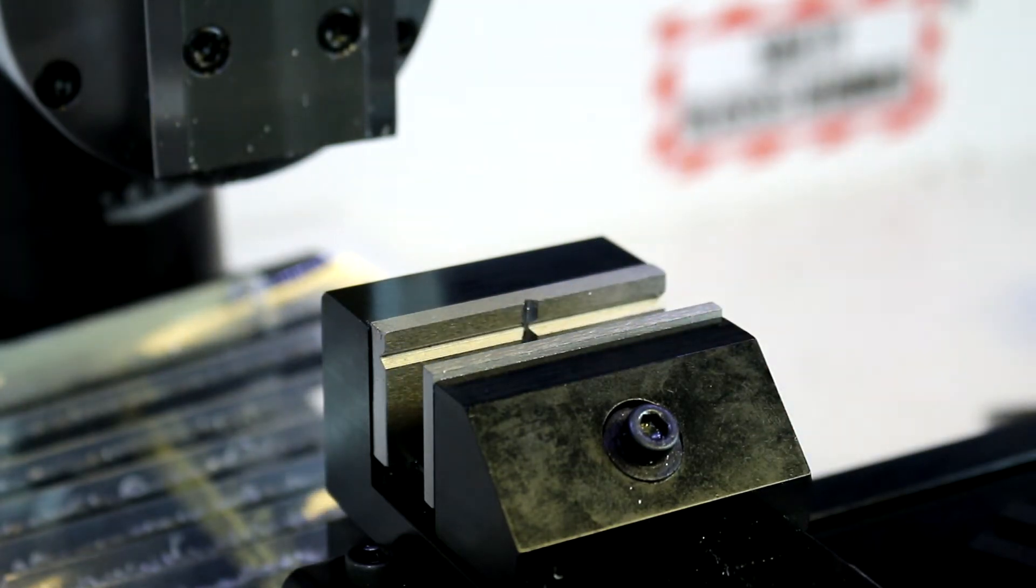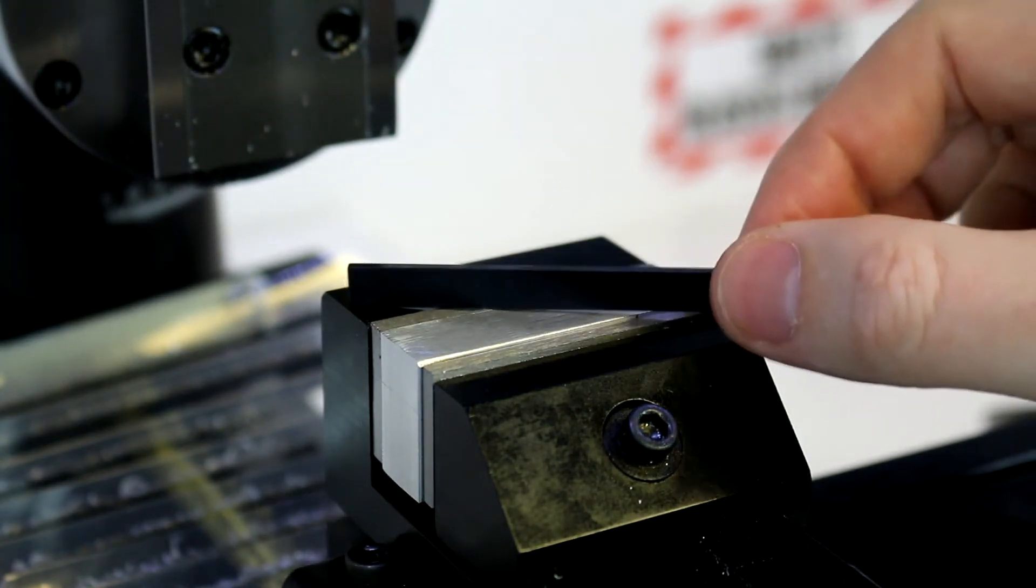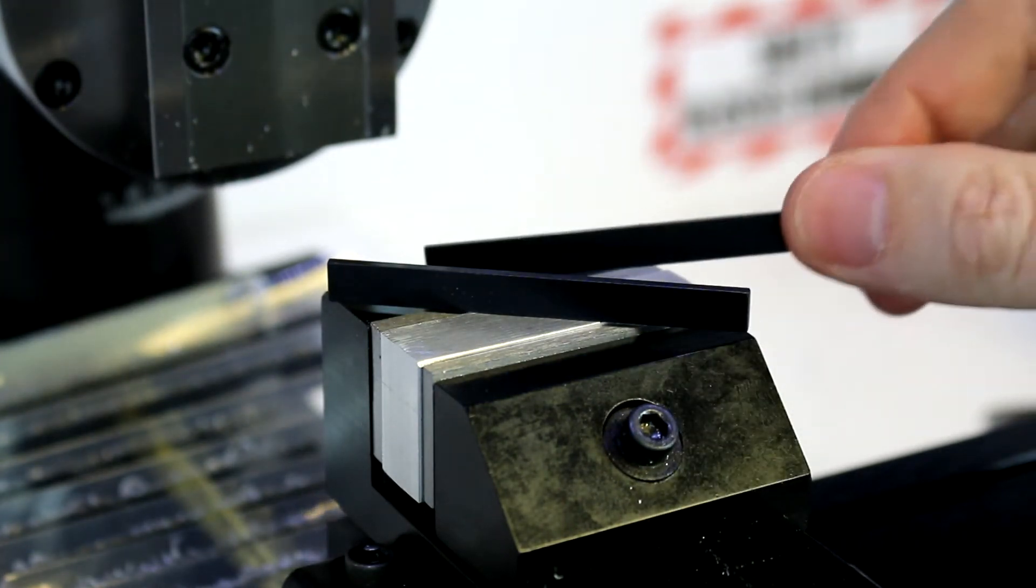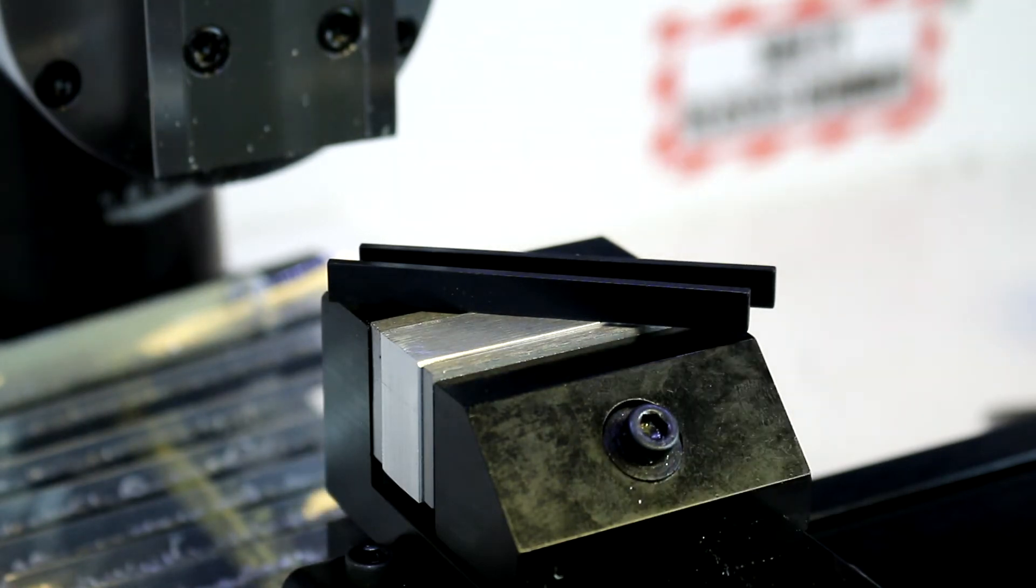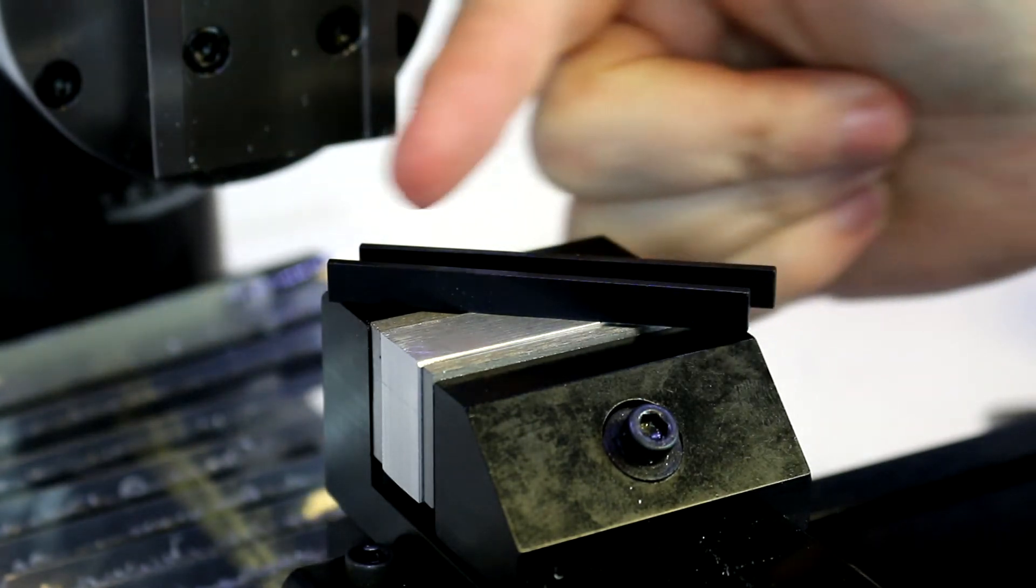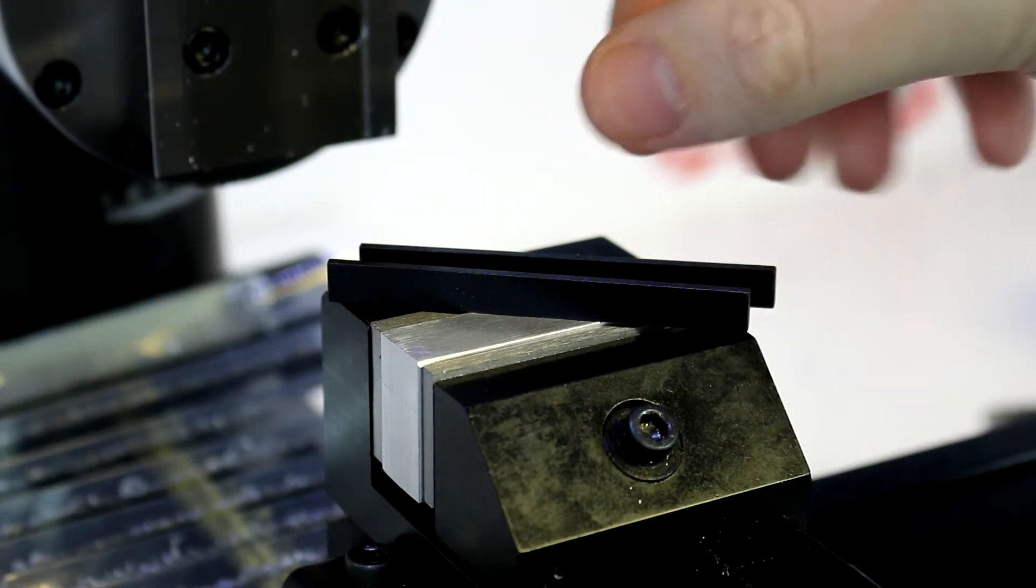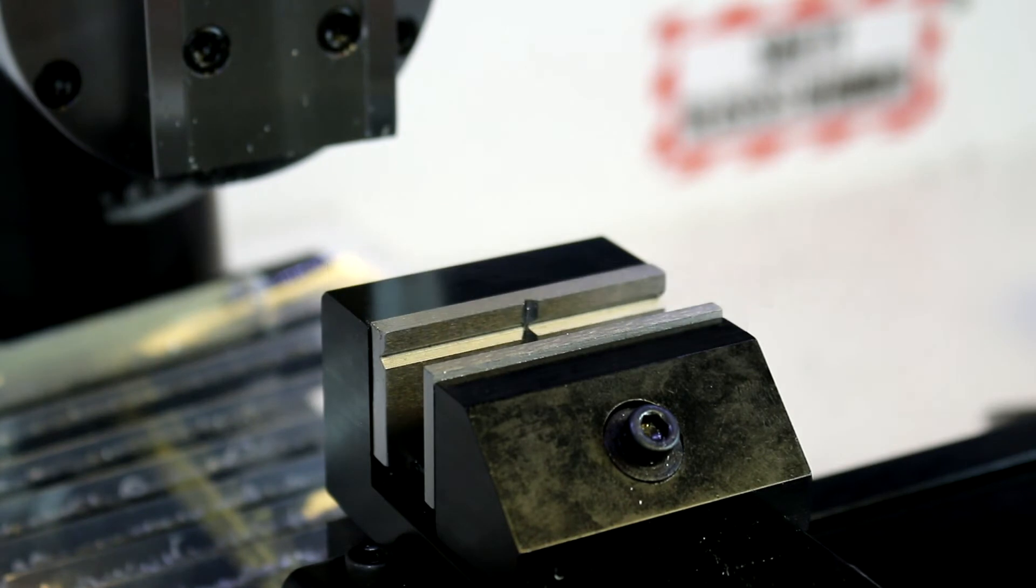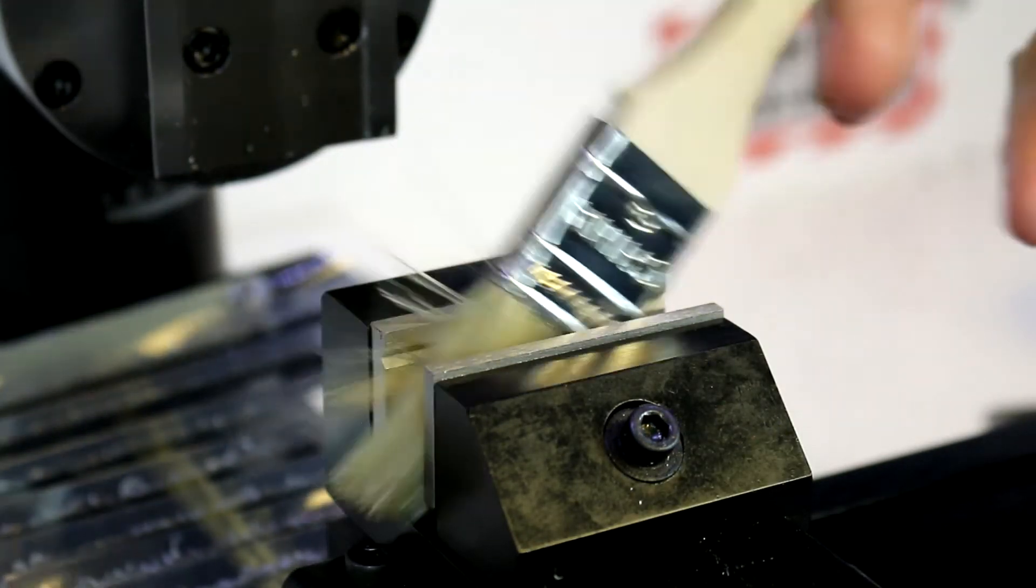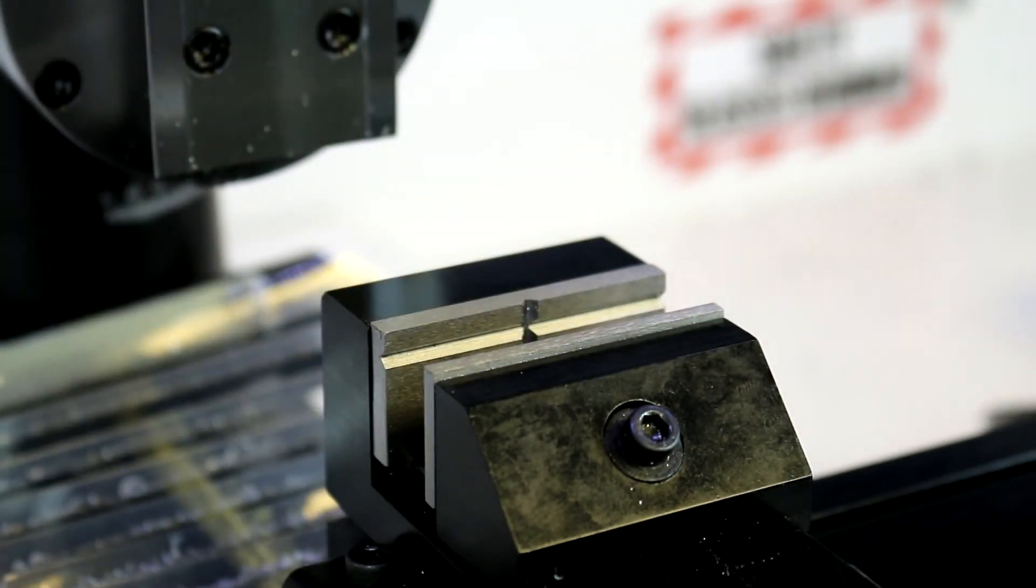The way that we solve this is with what are known as parallels. Parallels come in different heights and in matched pairs. They are precision machined and ground typically to very tight tolerances over the length of them so they can be used as a measuring device. This will allow us to lift our workpiece off of the base of the vice. You should make sure you're clean. We don't want any specks of dirt or anything down in there because that will affect our alignment.